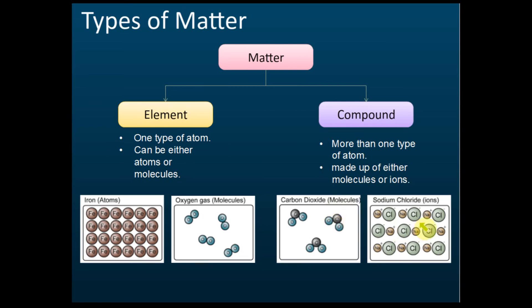Another example: the sodium ion and the chloride ion form a salt, and this is also a compound because there are more than one type of atom — sodium and chloride. So that is the difference between element and compound: element has just one type of atom, compound has more than one type of atom.